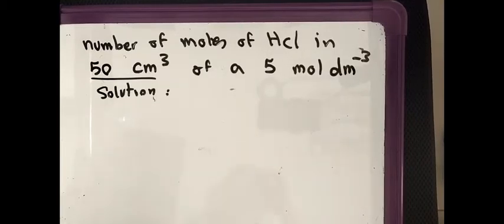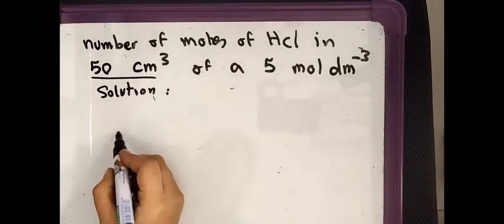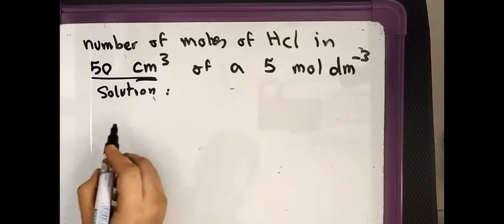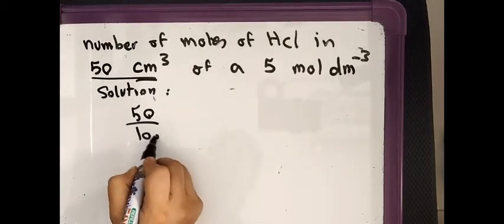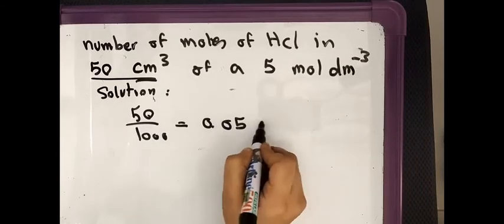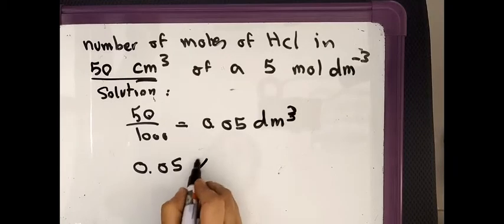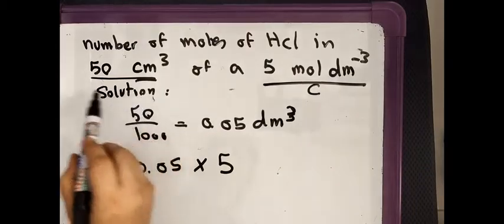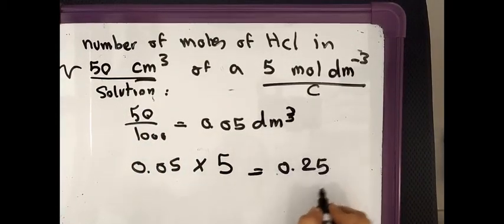In this question, we need to calculate the number of moles of HCl in 50 cm³ of a 5 mol/dm³ solution. First, check that the units are correct. Convert 50 cm³ by dividing by 1000, which gives 0.05 dm³. Then multiply 0.05 by 5 (the concentration) to get 0.25 moles.